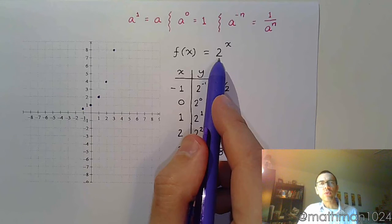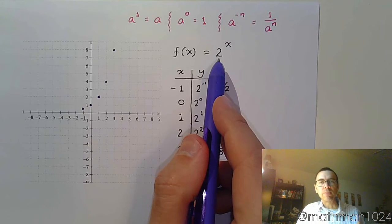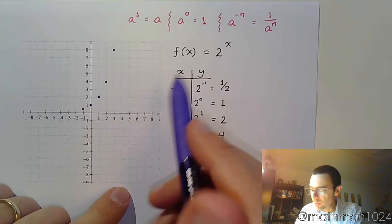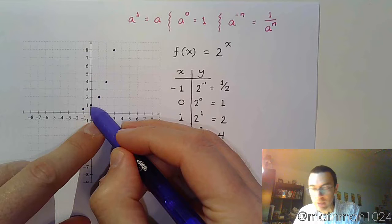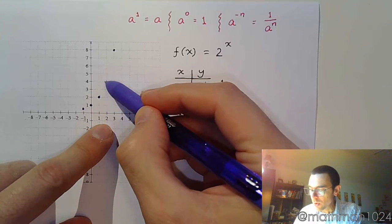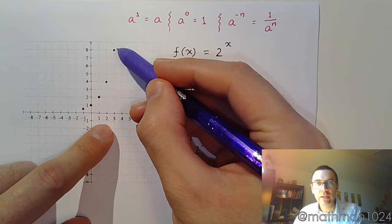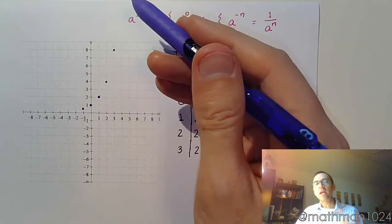So if I take 1/2 and I double that, I get 1. 1 times 2 is 2. Times 2 again is 4. Times 2 is 8. Times 2 is 16. And so on. So that's what happens as we go up to the right.